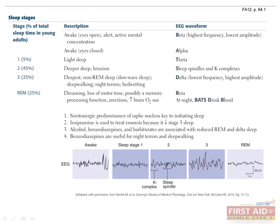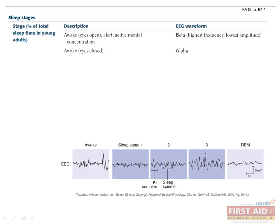Sleep stages is a fairly high-yield topic, and the various electroencephalogram or EEG waveforms associated with the stages of sleep just have to be memorized in order to answer questions on this topic. When someone is awake with their eyes open, the EEG waveform observed is a beta waveform, which has the highest frequency and lowest amplitude.